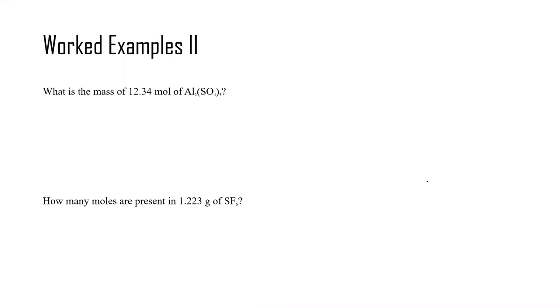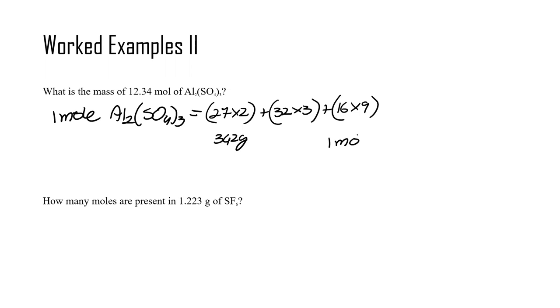Then we can also use the mass. So here in both these cases, we do not know what the mass of one mole is. So we first need to find the mass of one mole of aluminum sulfate and the mass of one mole of sulfur hexafluoride. So we start one mole of aluminum sulfate. 27 times 2 plus 32 times 3 plus 16 times 9, which is equal to 342 grams. And from here now, we can then continue working as we were doing before.